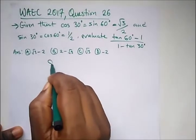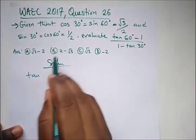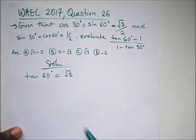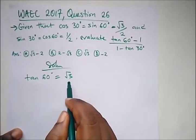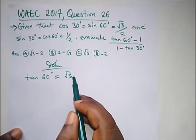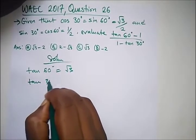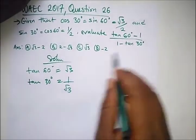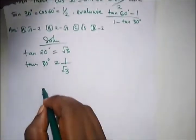From this particular question, we should know that tan 60 is root 3. So what we need to do is put in the value of tan 60. We should also know that tan 30 is 1 over root 3. So we just put this value into the equation.